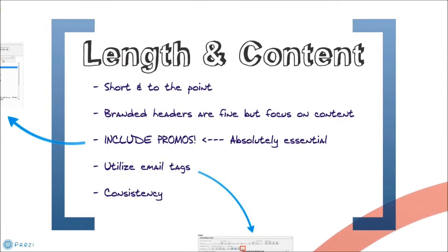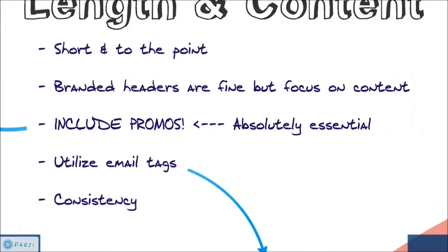So the first one is going to be length and content. I'm sure if you're like anybody else, you're probably getting bombarded with a million different emails every single day. That leads me to the first point: make the emails very short and to the point. Affiliates just want to see what new promotions you have or what's going on in your program, and keep it to that.